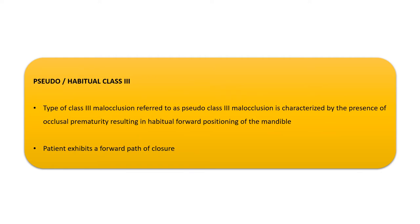There is another type known as pseudo Class 3 or habitual Class 3. This is a malocclusion wherein occlusal prematurity results in the patient habitually holding the mandible forward, which over a period of time leads to an appearance of Class 3 malocclusion. These patients may exhibit a forward path of closure, so when examining the patient you must look carefully for this and determine whether it is a true Class 3 or a pseudo Class 3.